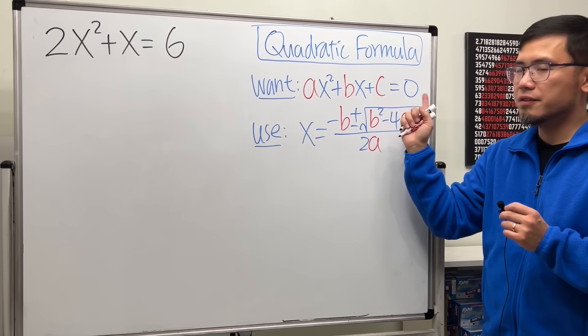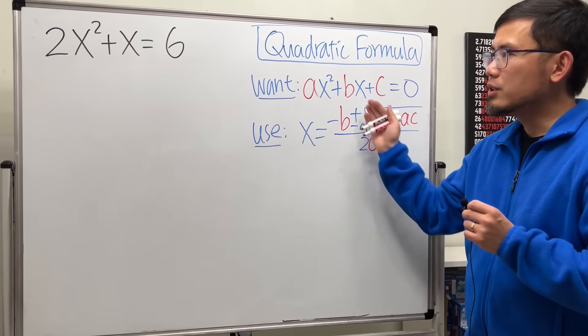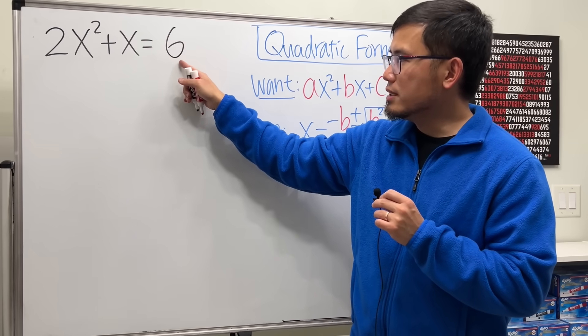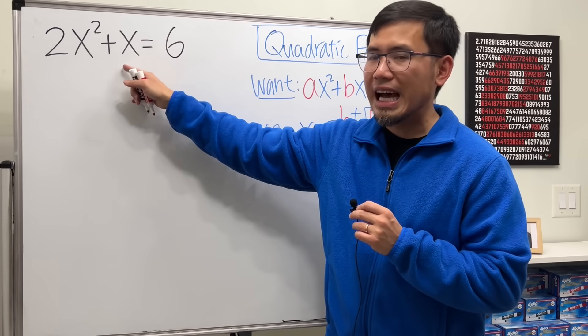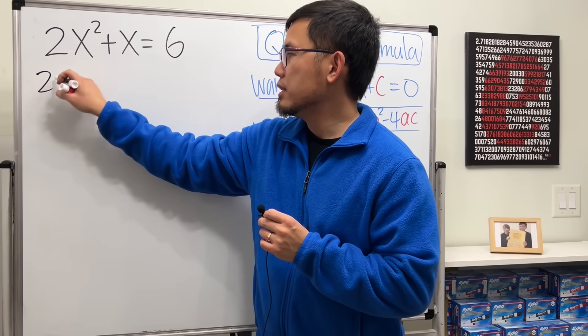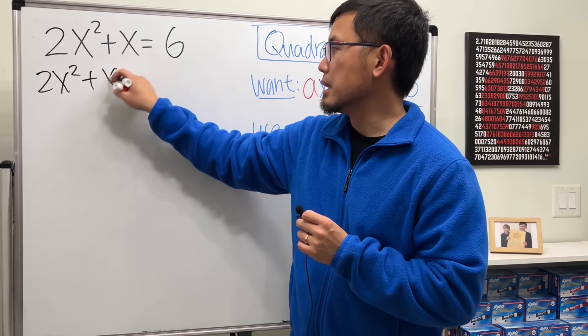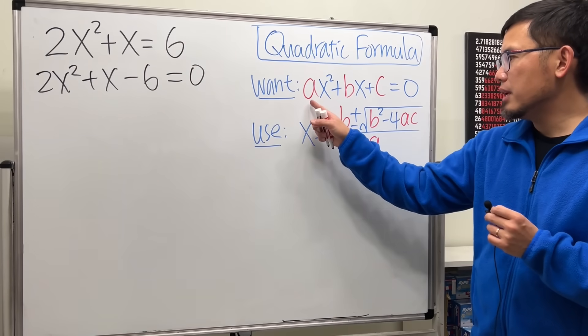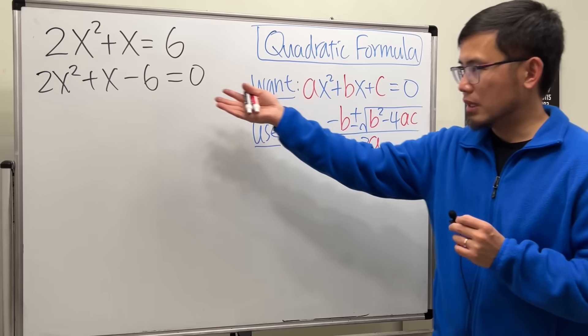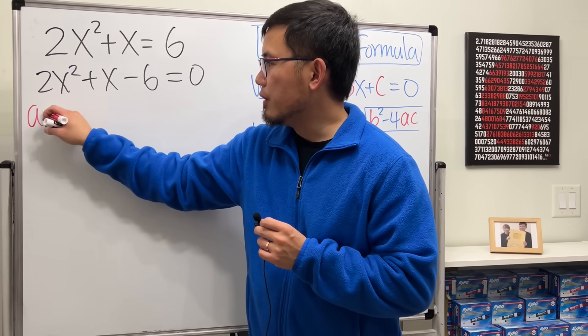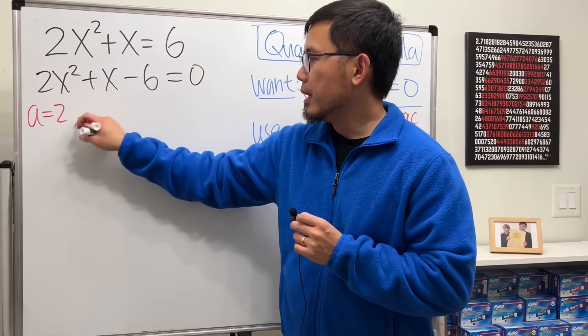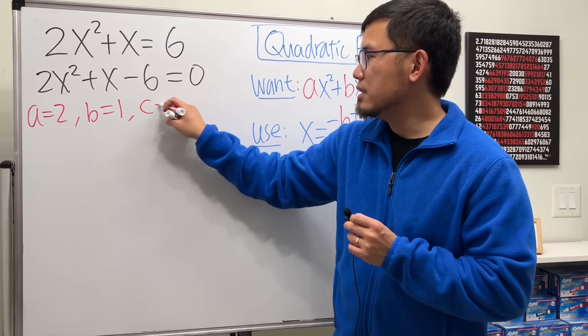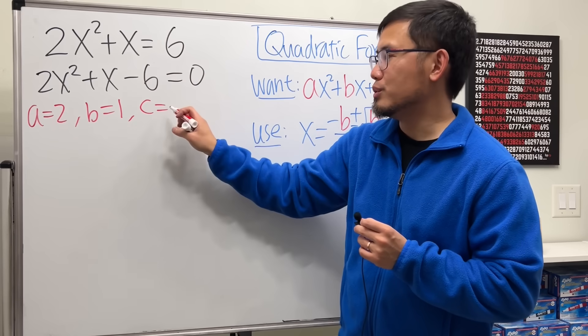And we will have to know the a, b, and c value carefully. So if you look at the original question again, this is equal to 6, we will once again have to bring the 6 to the other side. What we did earlier, we know it's 2x squared plus x minus 6 equals 0. And then let's just pick up the a, b, and c values. a is the coefficient of x squared, which is 2. b is the coefficient of x, which is 1. And then c is the last number, which is negative 6.